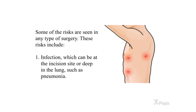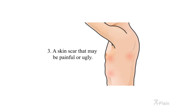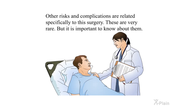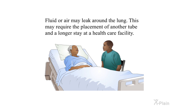Some risks are seen in any type of surgery, including: infection at the incision site or deep in the lung such as pneumonia; bleeding that may require a blood transfusion; and a skin scar that may be painful or unsightly. Other risks are specific to this surgery. The nerves between the ribs may be damaged, leading to numbness or persistent pain in the area of the incision or around the chest. Fluid or air may leak around the lung, which may require placement of another tube and a longer stay at the healthcare facility.